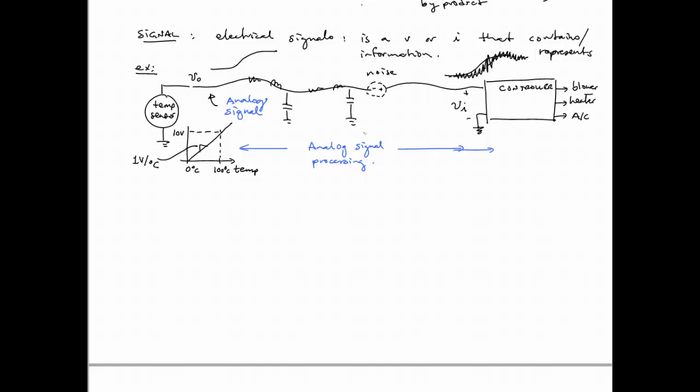So in this sensor case, it could put out any voltage between 0 and 10 volts, any particular value between 0 and 10, not just 1, 2, 3, but every intermediate value as well.